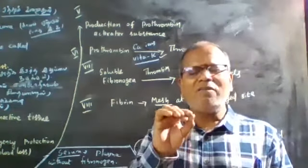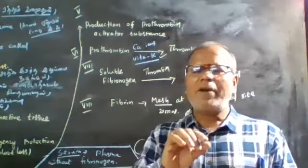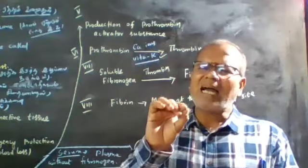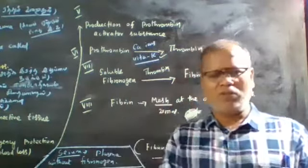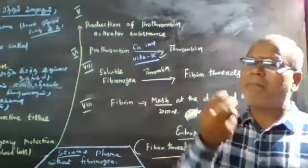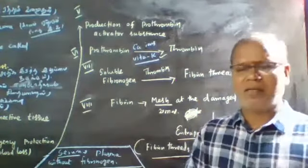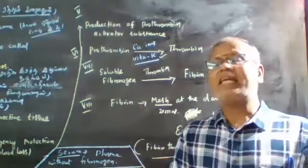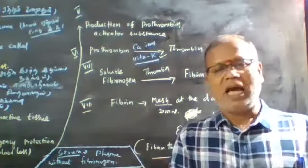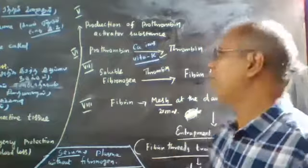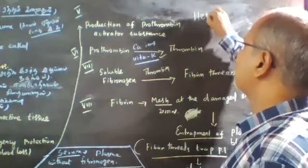Blood plasma without fibrinogen is called blood serum. Fibrinogen is removed during clot formation. An example of an anticoagulant — example for anticoagulant.